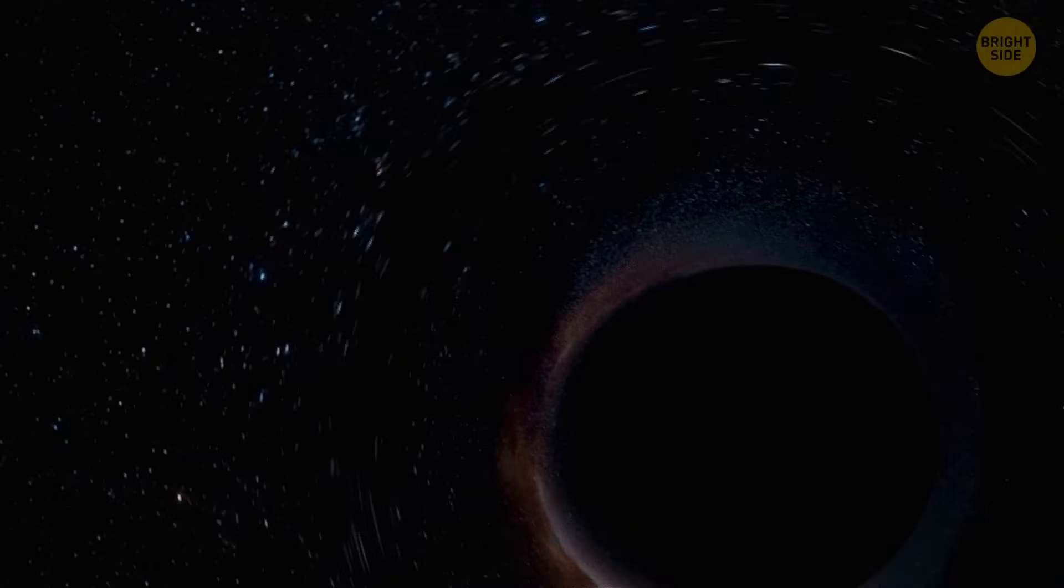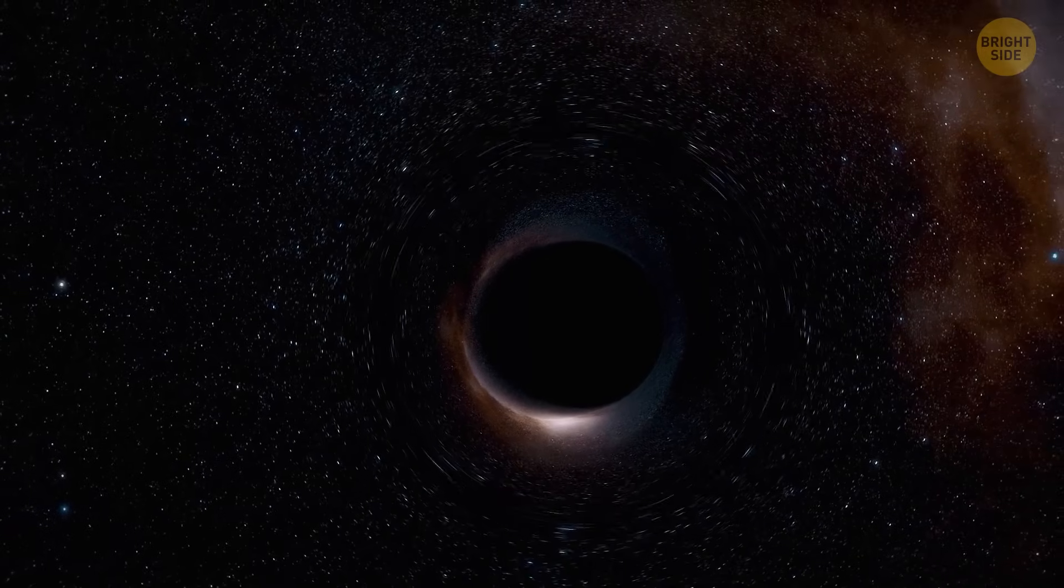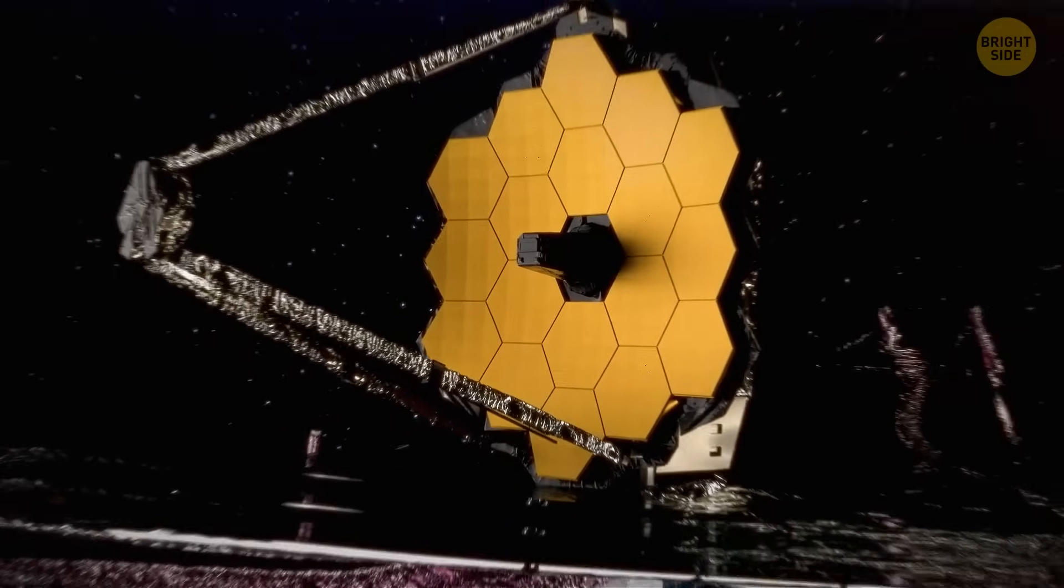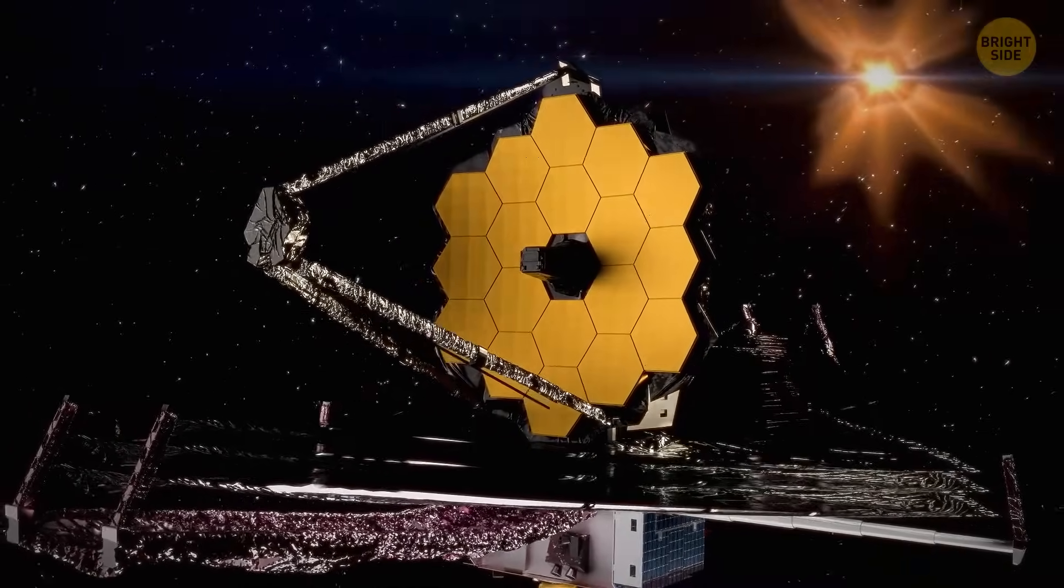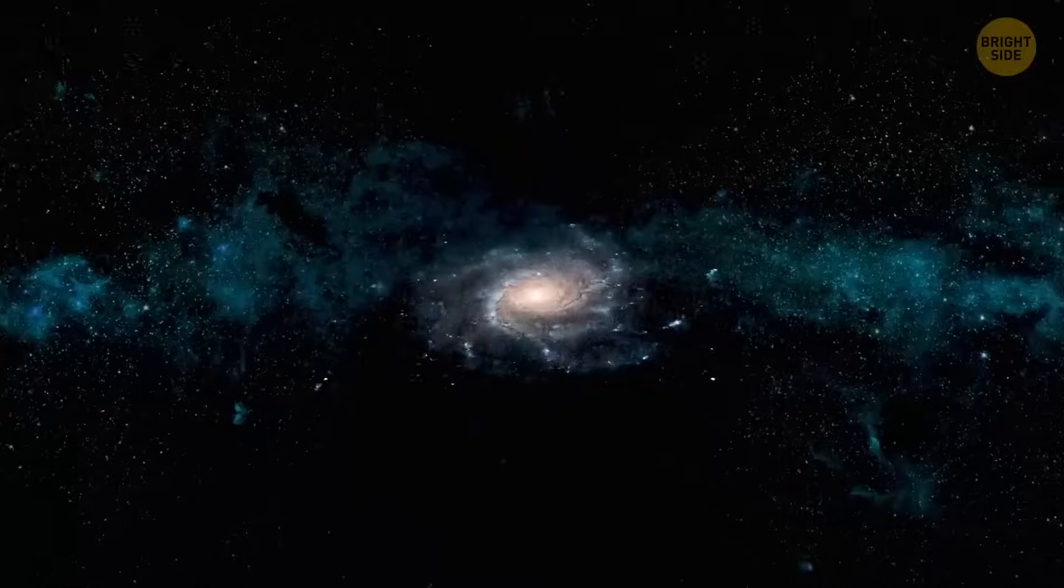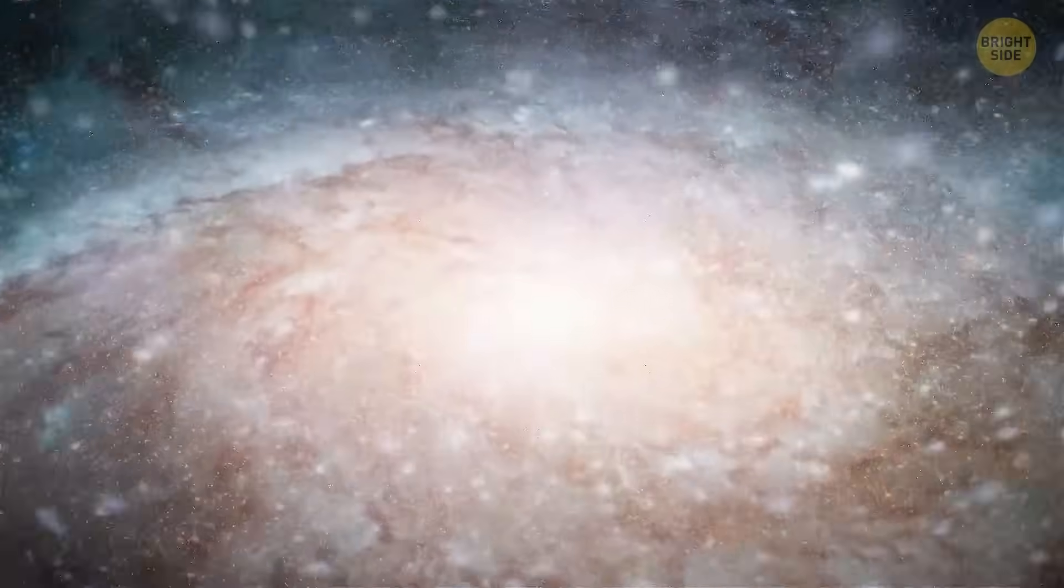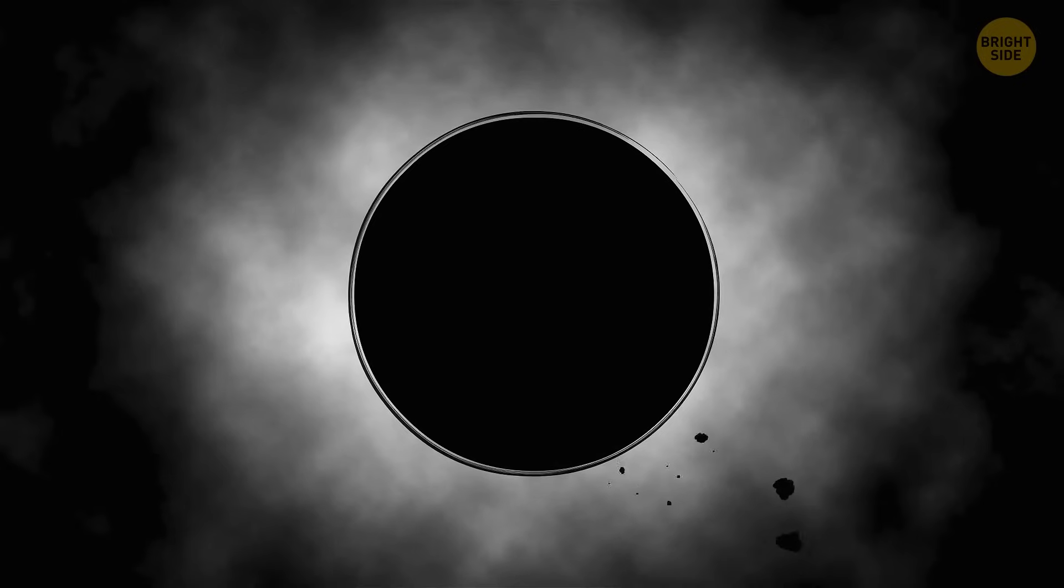Interestingly, giant black holes were believed to be big players in early cosmic history. But James Webb regularly finds an unexpected number of these beasts. For example, using the telescope, astronomers have detected a supermassive black hole from when our universe was less than 600 million years old.